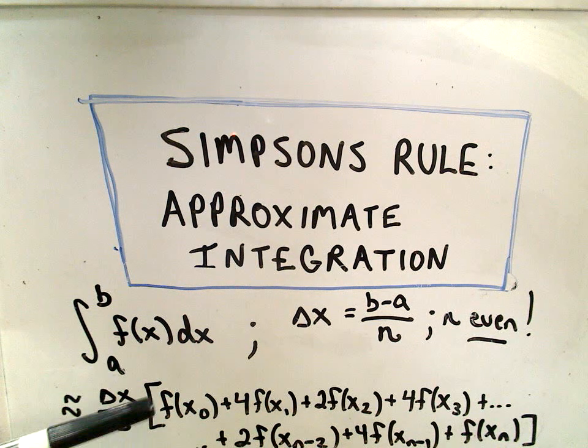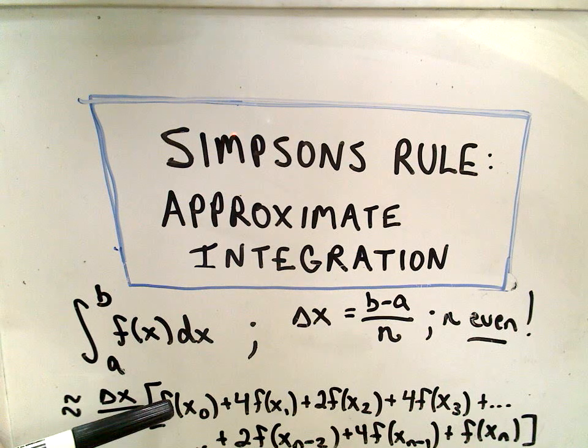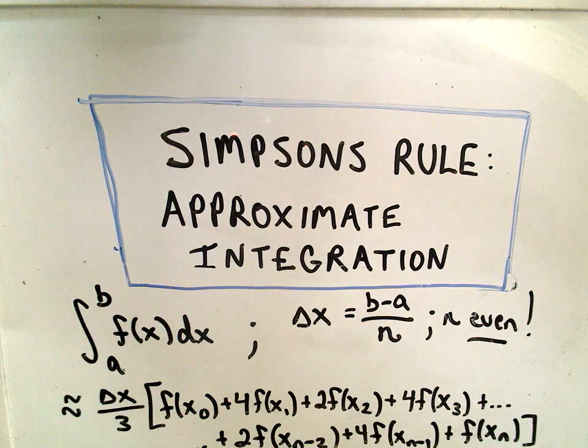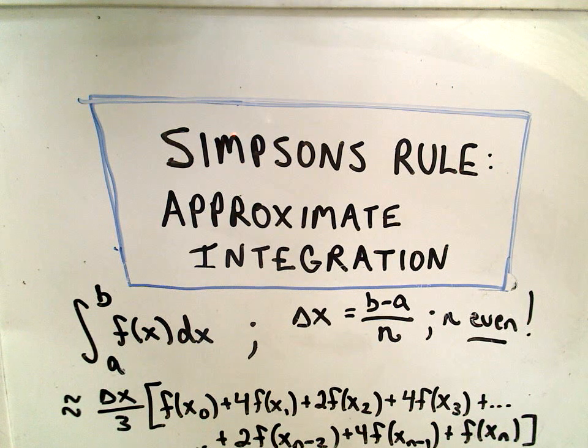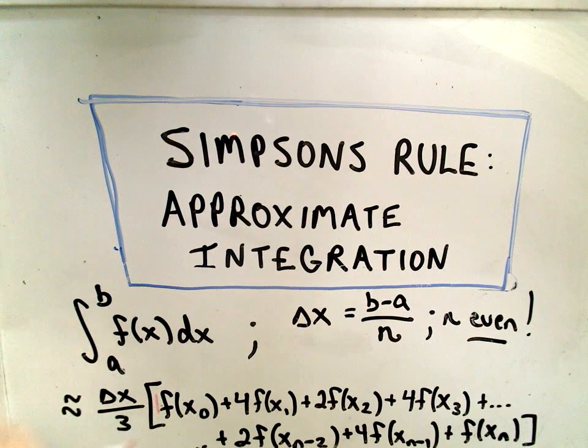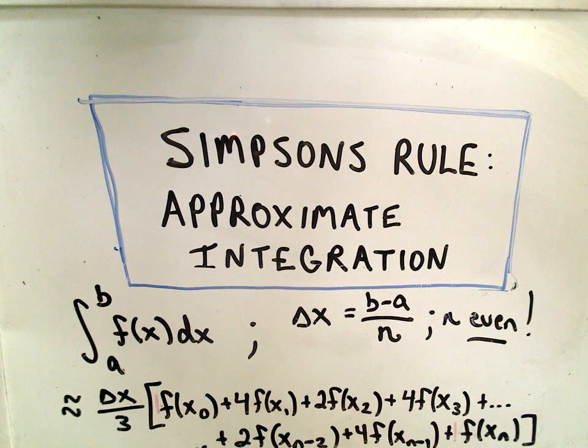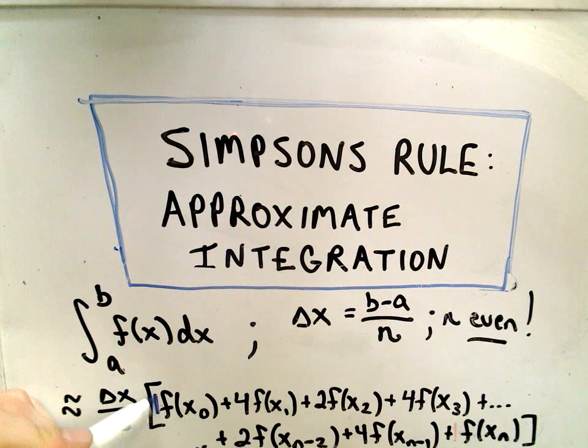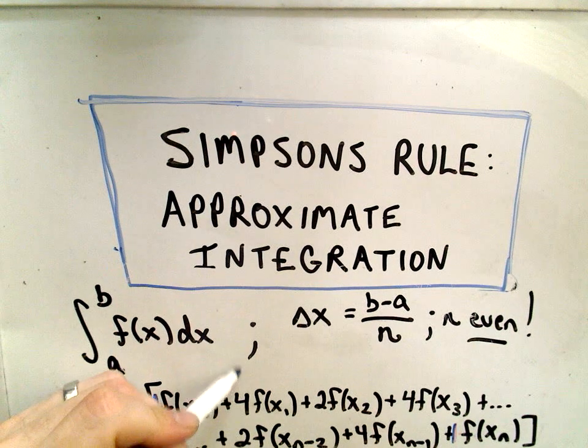And then it says all you do is you just evaluate the function at the first point, four times the function evaluated at the next one. Notice the pattern. It basically is going to alternate. So, the first point, the coefficient is a one. The last point, the coefficient is also a one. The ten's not working too well. So, the coefficient is a one and a one. And then they alternate.